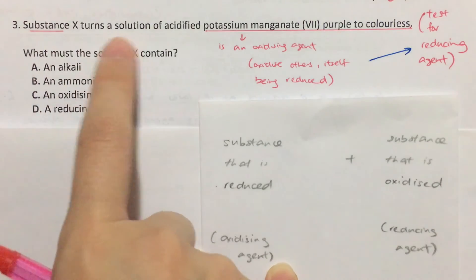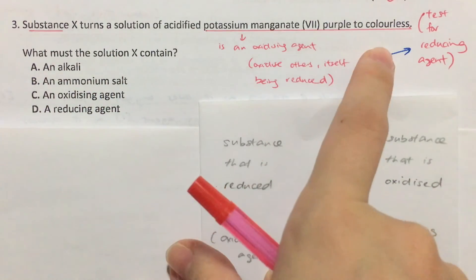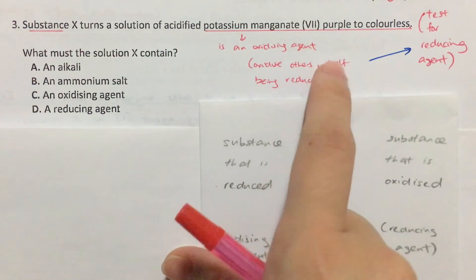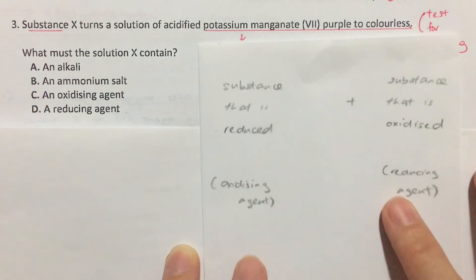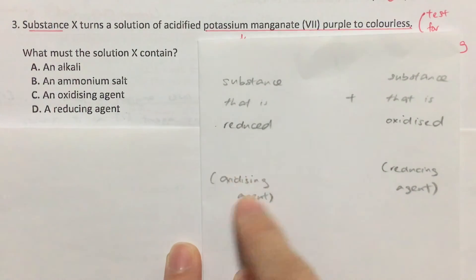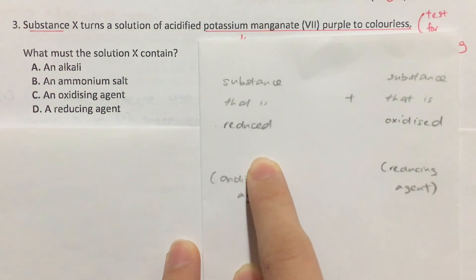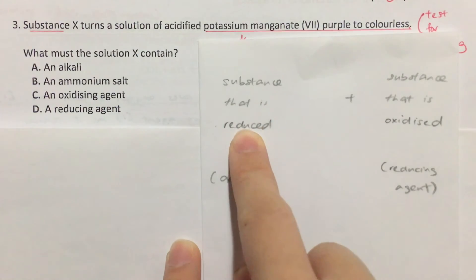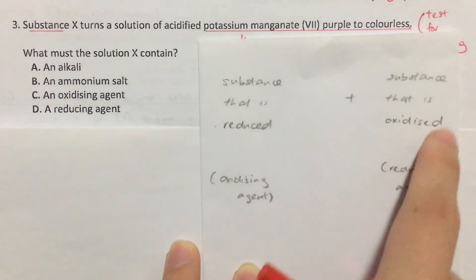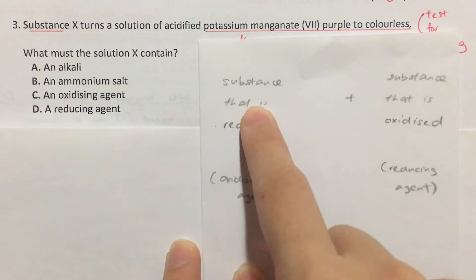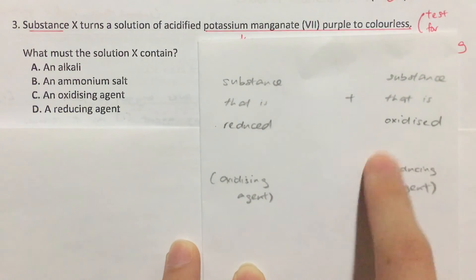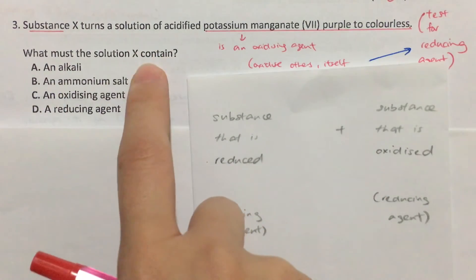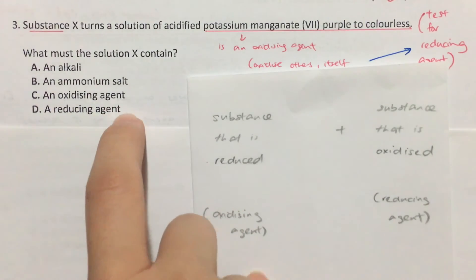Substance X turns a solution of acidified potassium permanganate from purple to colorless. Potassium permanganate is an oxidizing agent, which oxidizes others and is itself reduced. The color change purple to colorless means it has been reduced. Therefore the substance that was added must be a reducing agent — it reduced my potassium permanganate. So solution X must contain a reducing agent. The answer is D.